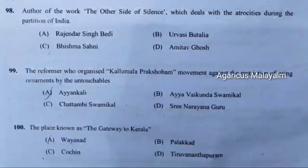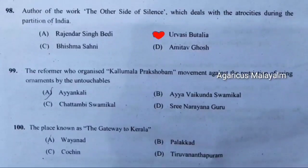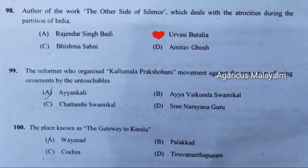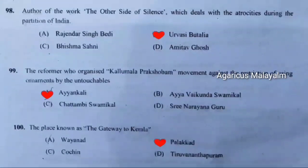Ninety-eighth question: Author of the work 'The Other Side of the Silence', which deals with the atrocities during the partition of India. Correct answer is option B — Urvashi Butalia. Ninety-ninth question: The reformer who organized the Kalumala Prakshobha movement against the restriction of using ornaments by untouchables. Correct answer is option A — I. Anjali. Hundredth question: The place known as the gateway to Kerala. Correct answer is option B — Palakkad. Thank you.